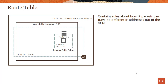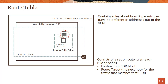A route table contains rules about how IP packets can travel to different IP addresses out of the VCN. You can see there is a route table which is attached to the subnet. The route table consists of a set of route rules. Each rule specifies a destination CIDR block and specifies the route target — the next hop for the traffic that matches that CIDR.